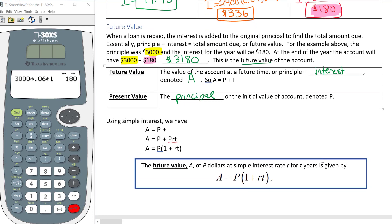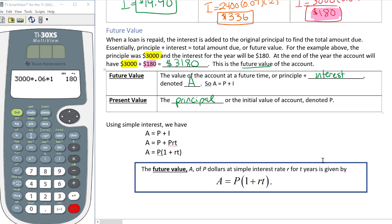If we're using simple interest, we have A equals P plus I. Now we know the interest, we have the formula for interest, and the interest is PRT. So if I replace instead of I, we replace it with PRT, then I have a P in both of them. So what I can do is I can factor out the P.